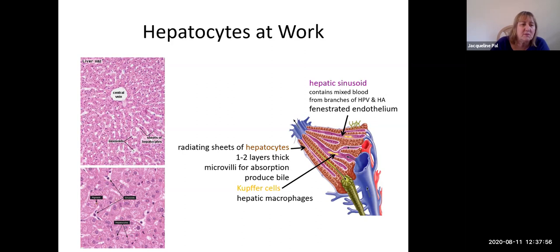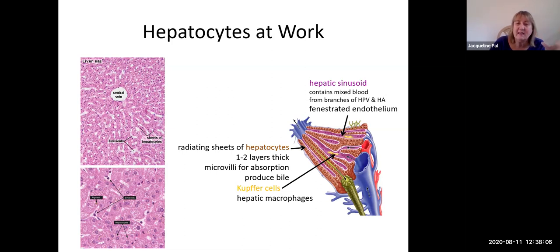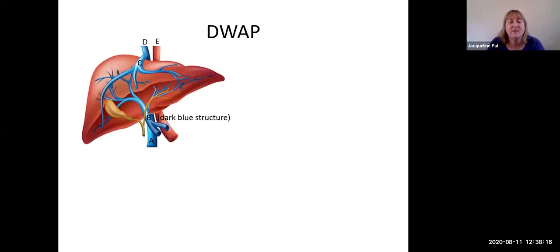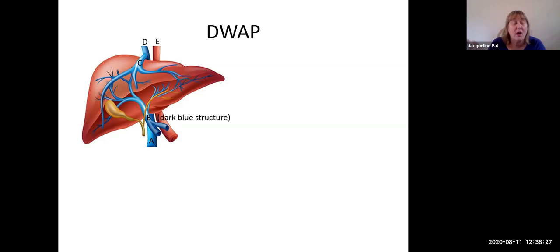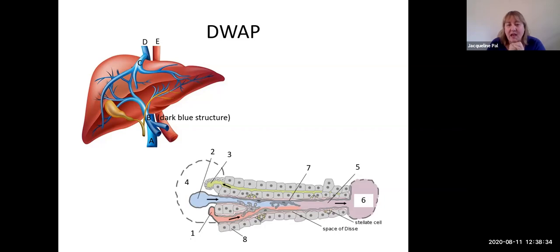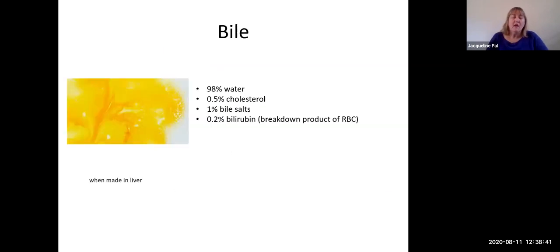Here are two photomicrographs with labeled structures — stop the video and make sure you understand the arrangement within a liver lobule, then go back to the scanning electron micrograph to test yourself. There is also a picture of the liver with labeled blood vessels and a section on micro-anatomy of the liver to work through for self-assessment.